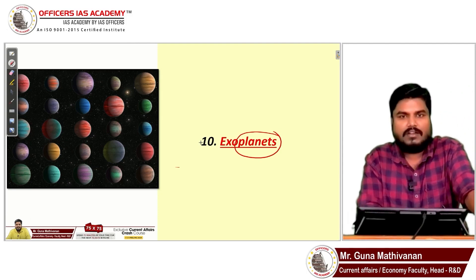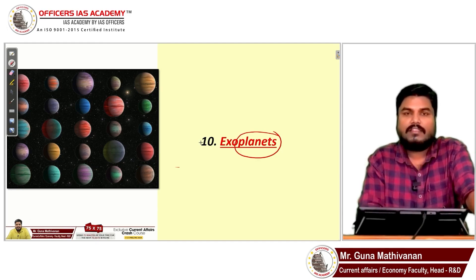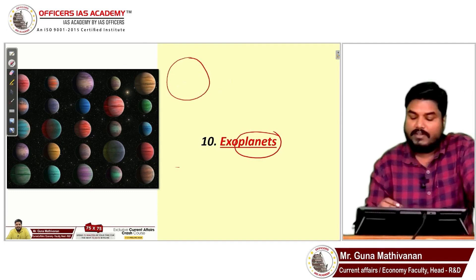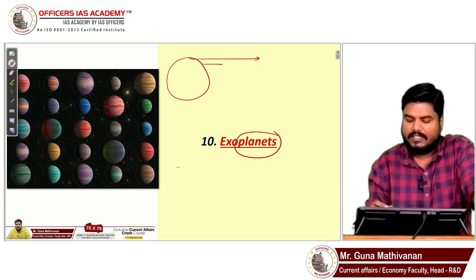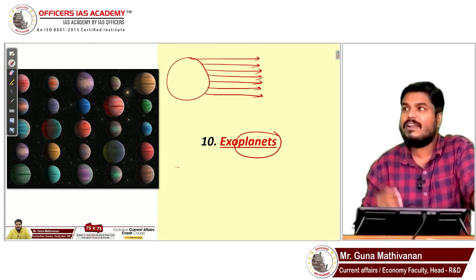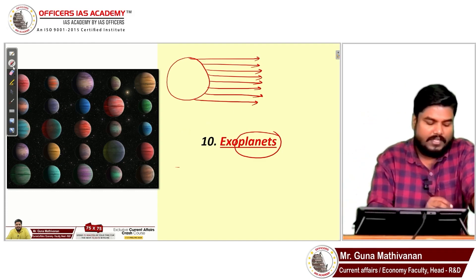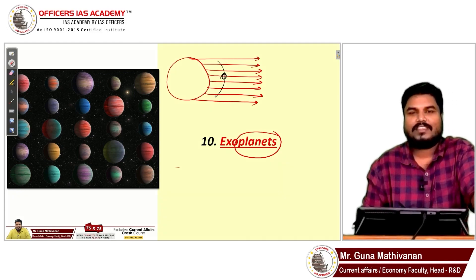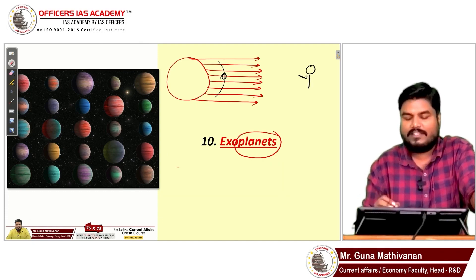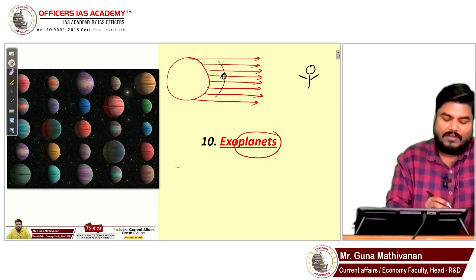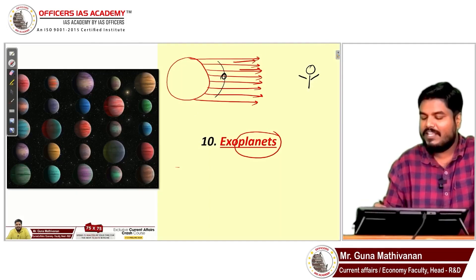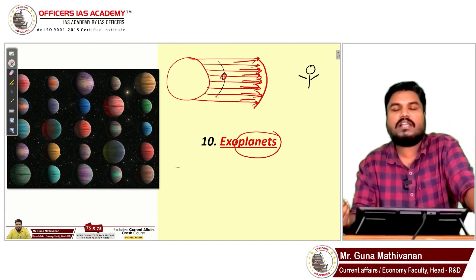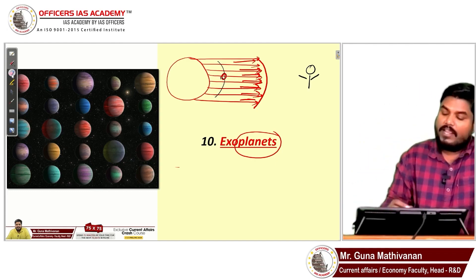With a traditional telescope you cannot easily observe exoplanets. The reason is that a star produces a lot of radiation and is extremely bright — just like our Sun, which you cannot look at directly. If a planet is orbiting that star, the star's brightness will mask and hide the planet, making it very difficult to see.